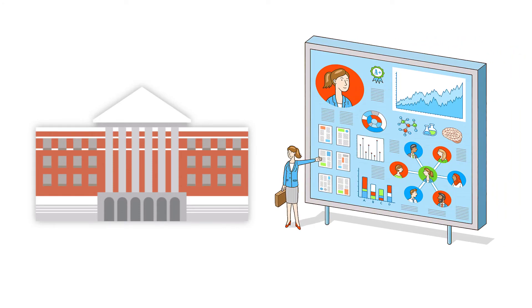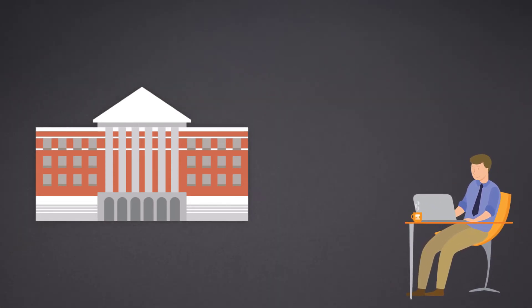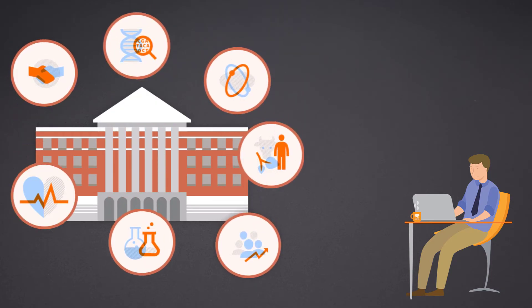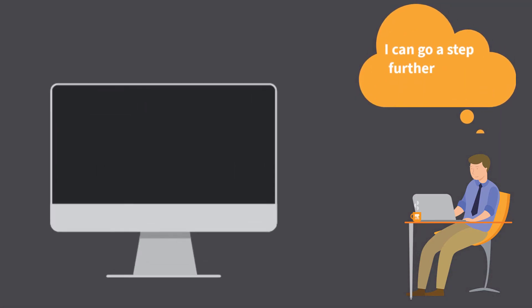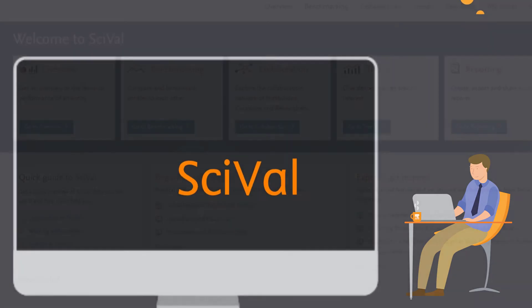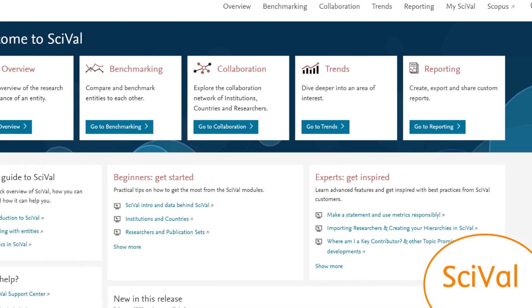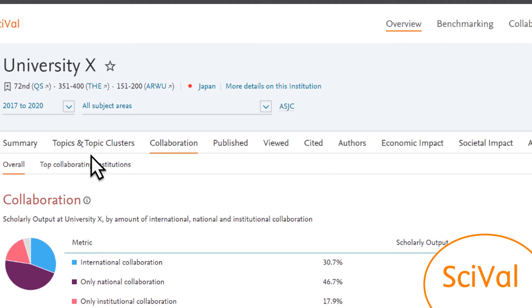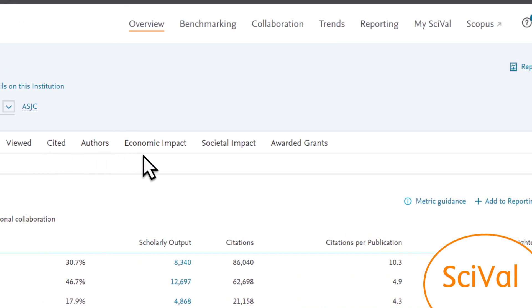Not only is this good for the institution, but it is also important for the researcher. With better alignment and understanding of Scopus data, Lee now has a clearer picture of the research affiliated with the university. Lee now decides to take his work a step further, digging deeper into how the university is doing in collaboration and what research areas are of particular strength or ripe for opportunity.